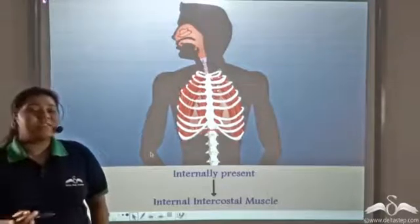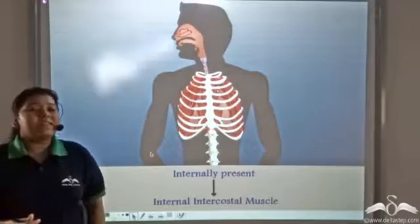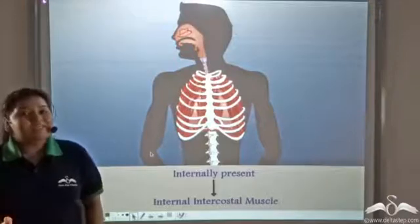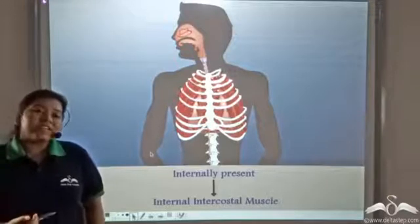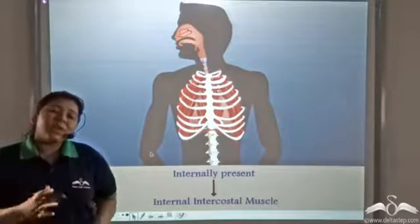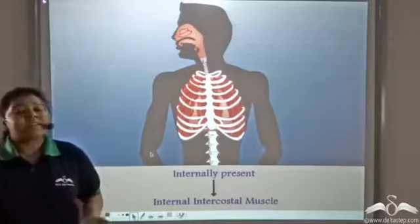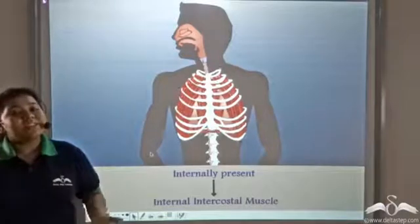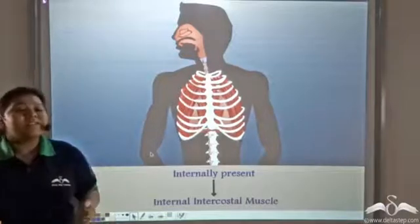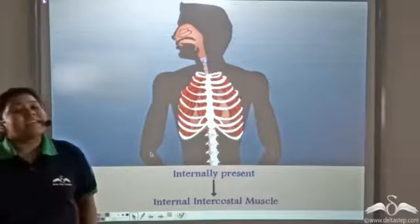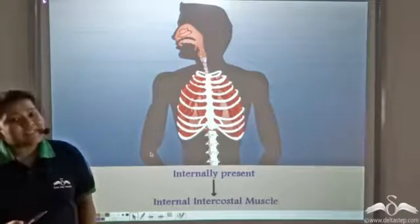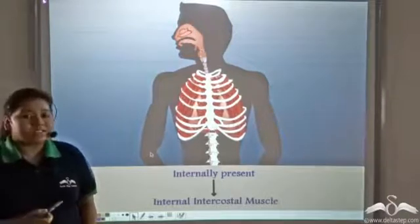Internal intercostal muscles relax during inspiration and contract during expiration, trying to pull back the ribcage to its deflated position.